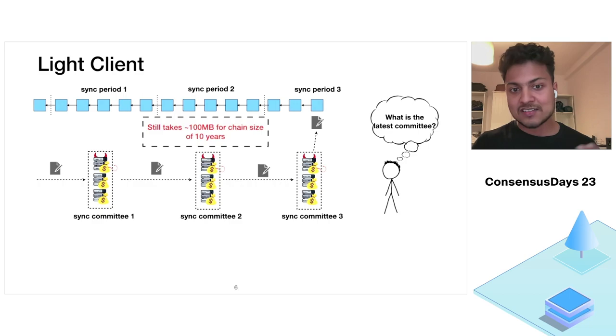This allows Bob to linearly verify the signatures and then quickly just do a Merkle inclusion proof to check the correctness of the interested state. Unfortunately, this still takes around 100 megabytes of storage for a chain size of 10 years. One thing to note here, though, is once you know the latest sync committee, you can simply verify any interested state. Because once you know the sync committee, you can ask the signatures to the latest block and then ask for a Merkle inclusion proof. So from now on, we will only bother about finding the latest sync committee.